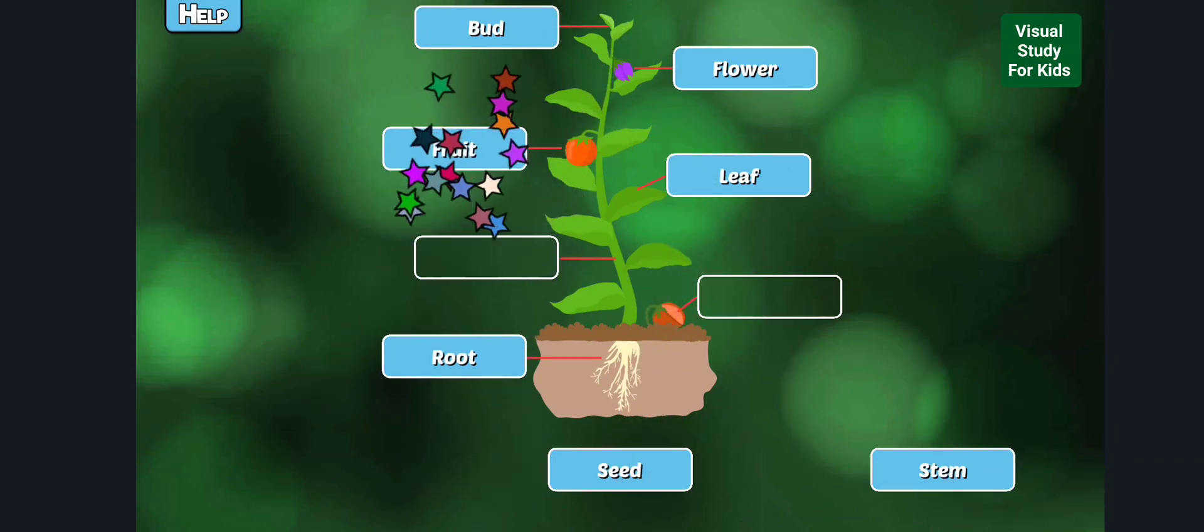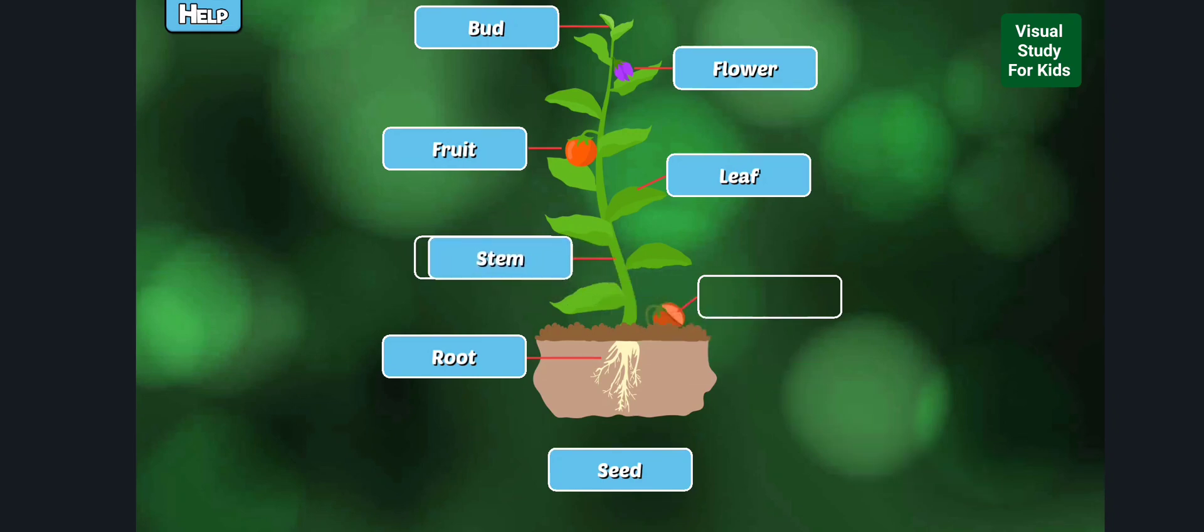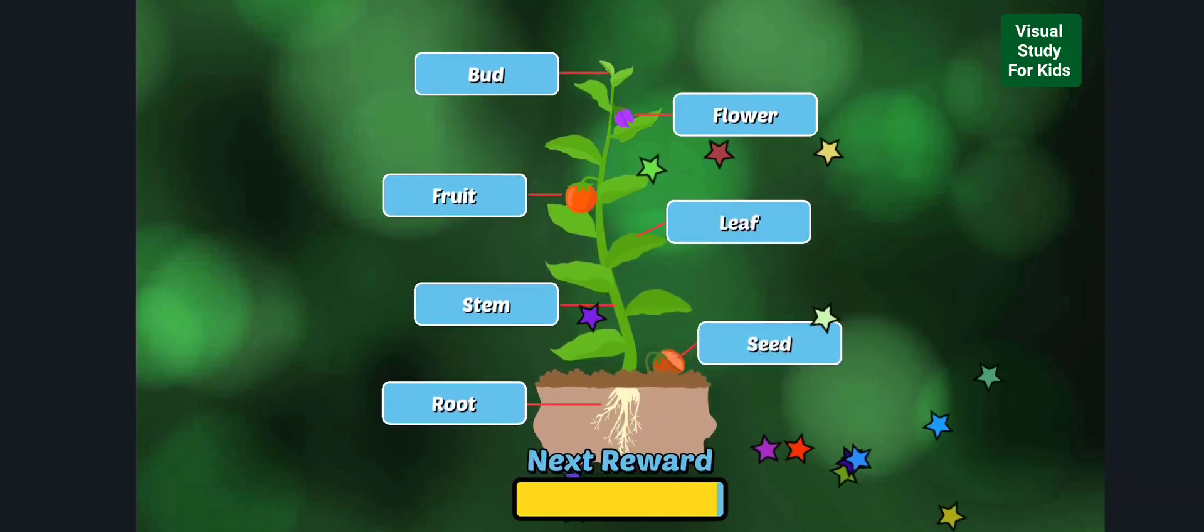Fruit provides a covering for seeds. It can be fleshy like an apple or hard like a nut. Stem: The stem supports leaves, flowers, and fruits and conducts water and nutrients. Seeds contain new baby plants.